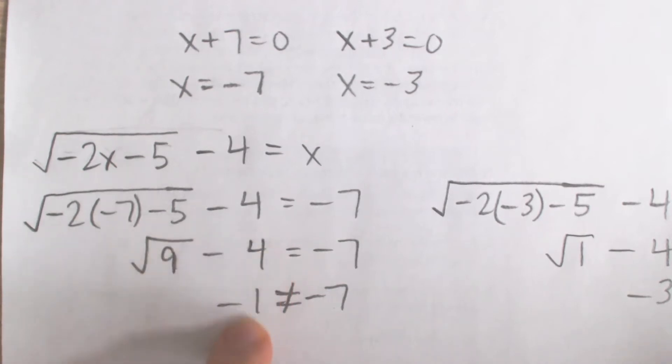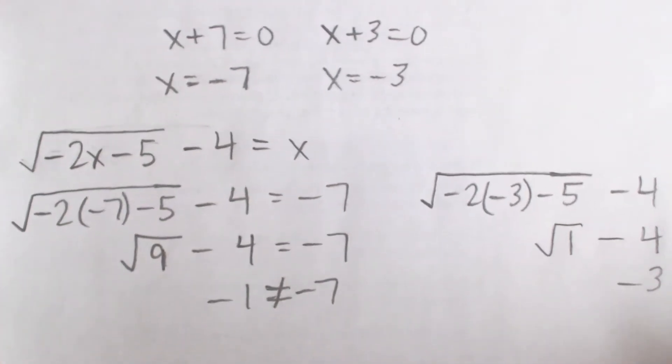Square root of 9 is 3. 3 minus 4 is negative 1. And you can see that's not equal to x, which is negative 7 on the right side. So negative 7 is actually not a solution to this equation.